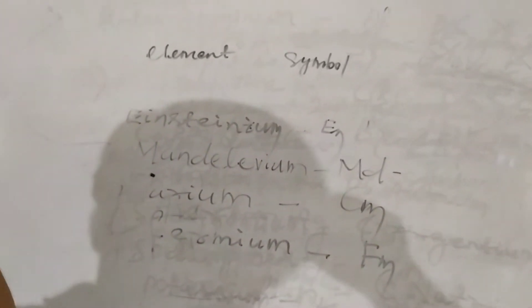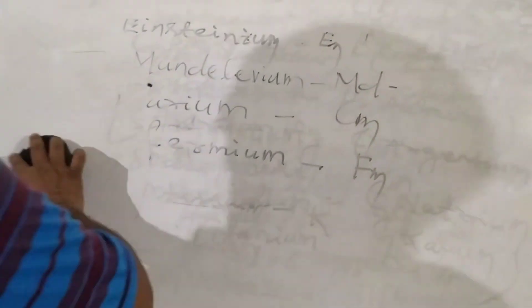So similarly there are other scientist names who named some elements after their discoveries and another category that are named by countries names.